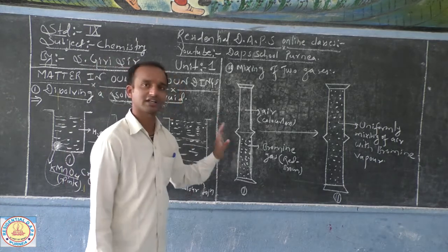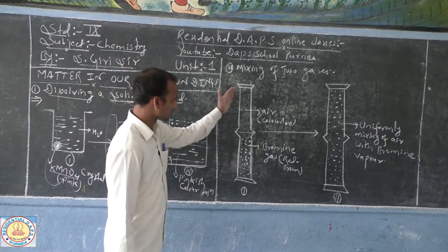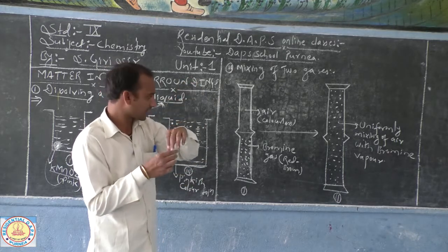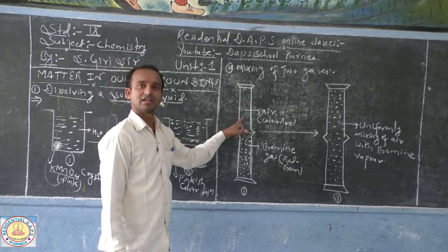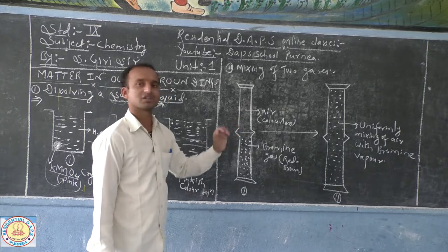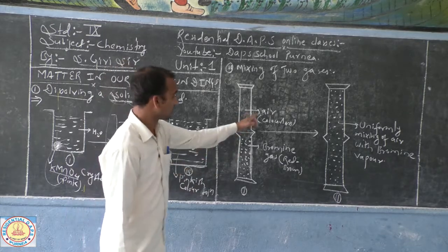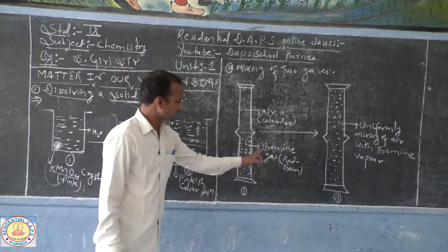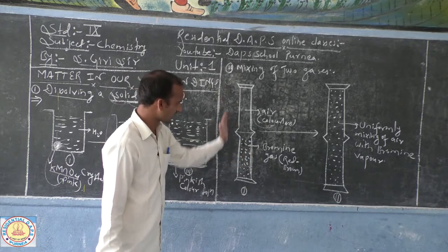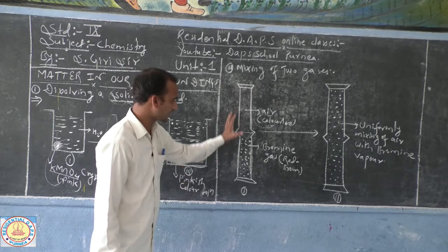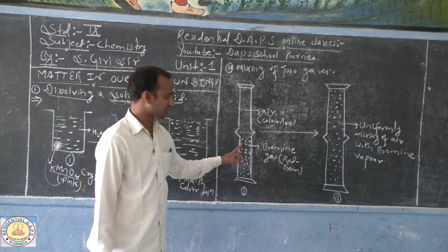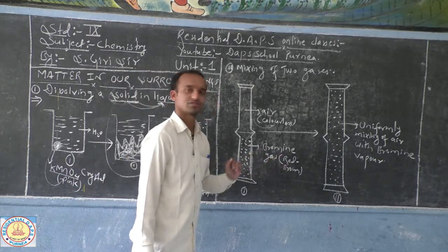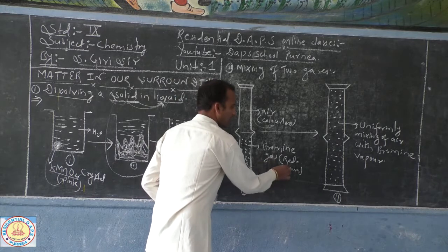This is why we have to take two gas jars. You can see two gas jars, one placed above the other. In one jar you have to take air. Air is colorless, you cannot see it, it is not visible. Both gas jars are transparent. In the lower section you have to take bromine gas, which is red-brown in color.